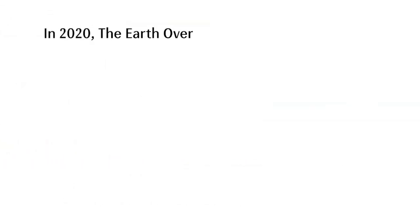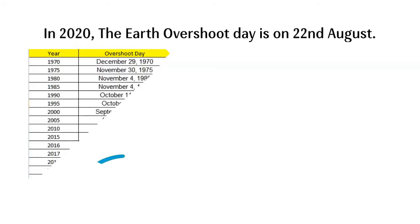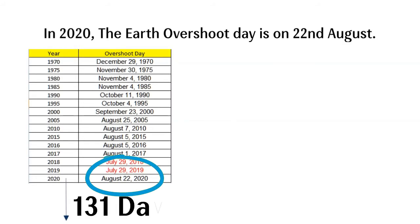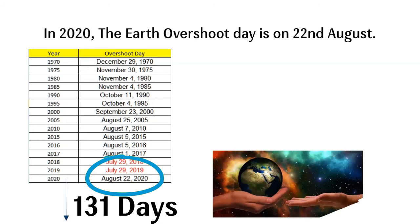In 2020, Earth Overshoot Day is on 22nd August, meaning for the rest of the year — for 131 days — we will draw resources that should have been kept secure as the rightful share of our future generations.